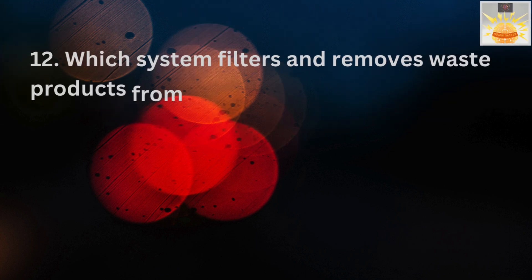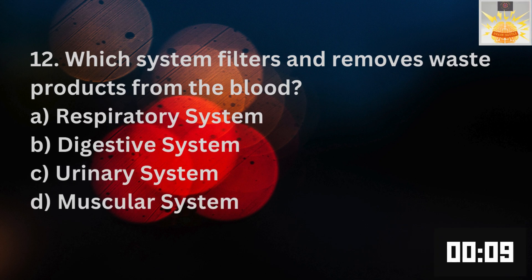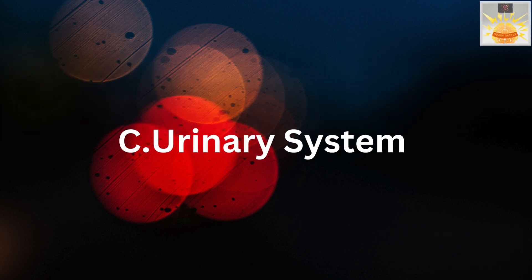Great. Let's move on to the next one. Question 12. Which system filters and removes waste products from the blood? A. Respiratory system. B. Digestive system. C. Urinary system. And D. Muscular system. Yes, and the right answer is C. Urinary system. That was an easy one, right?